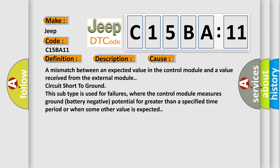This subtype is used for failures where the control module measures ground battery negative potential for greater than a specified time period or when some other value is expected.